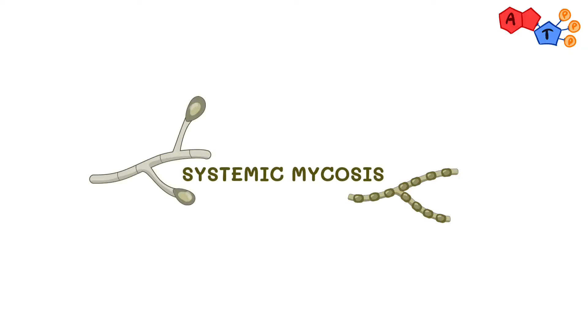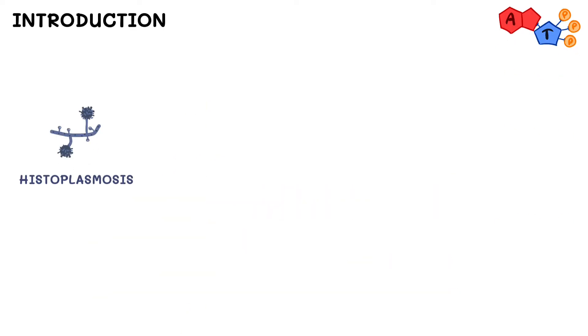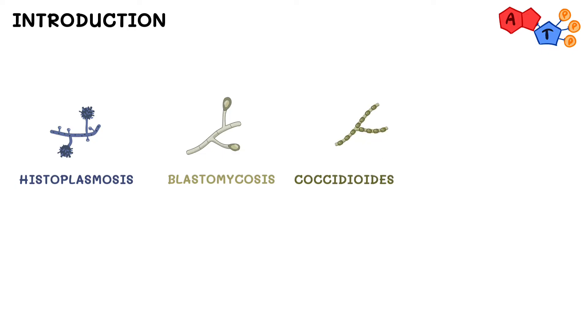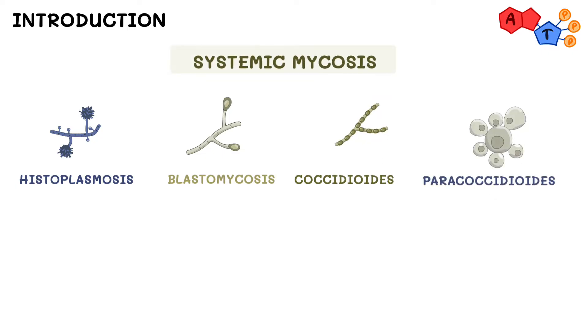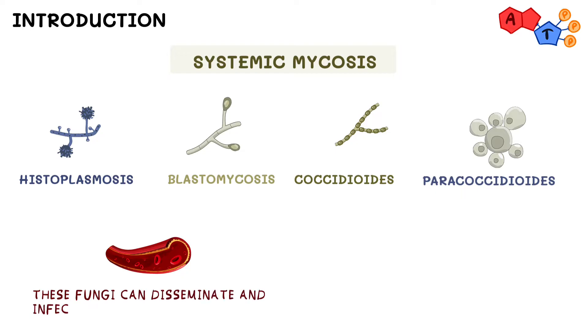Welcome back to another ATP video. In this video we'll be covering systemic fungi, also known as systemic mycosis, including histoplasmosis, blastomycosis, coccidioides, and paracoccidioides. They're called systemic because these fungi can disseminate and infect multiple organ systems. Remember from our intro to fungi video where we mentioned fungi can exist as dimorphic or monomorphic forms.